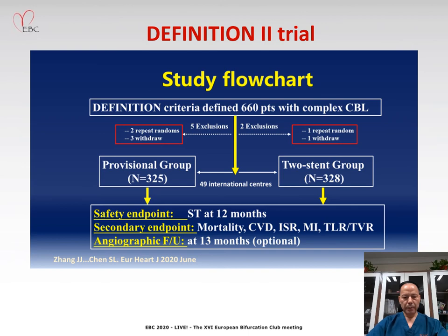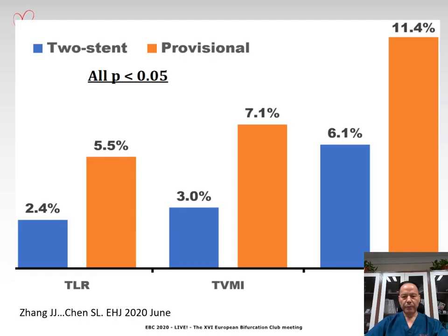Secondary endpoints included all-cause death, cardiovascular death, target vessel-related stenosis, myocardial infarction, TLR, and TVR. At one-year follow-up, the prevalence of target lesion failure was 11.4% in the provisional group compared to 6.1% in the two-stent group, mainly because of the higher rate of TLR and target vessel myocardial infarction in the provisional group.